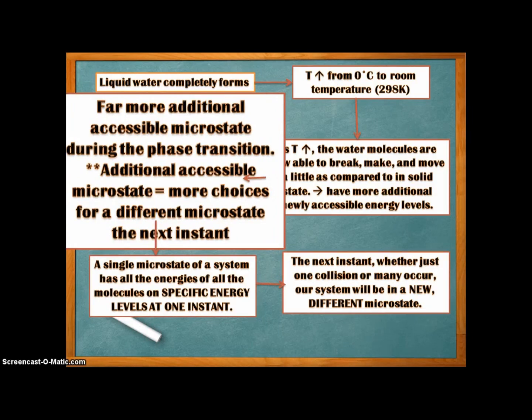Additional accessible microstates means that at any instant, the total energy of the system is in just one microstate, but it has very many more choices for a different microstate the next instant. Note that a single microstate of a system has all the energies of all the molecules on specific energy levels at one instant. In the next instant, whether just one collision or many occur, our system will be in a new, different microstate.